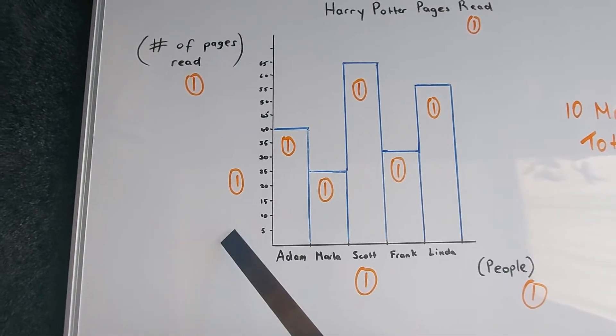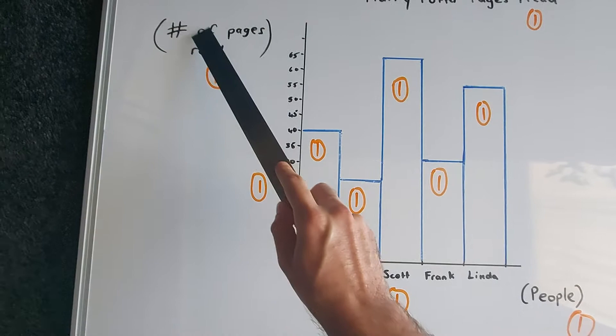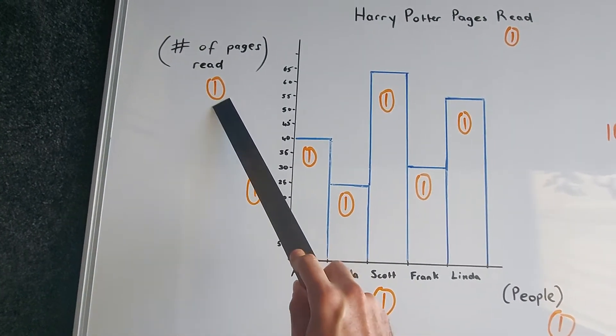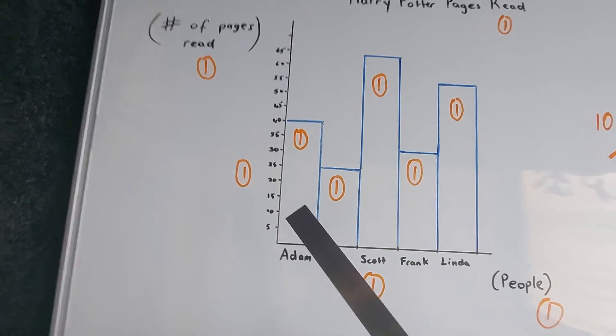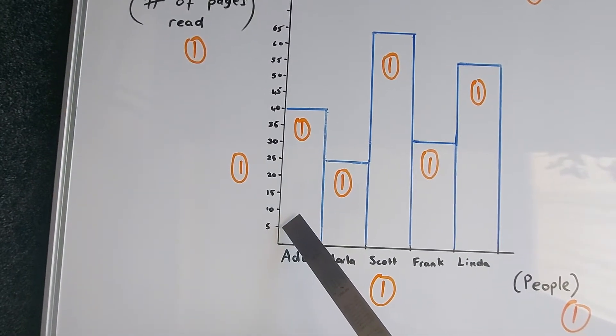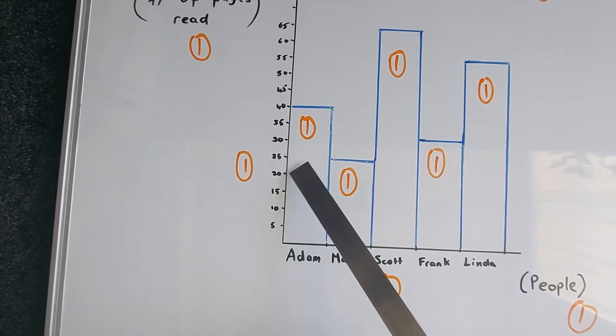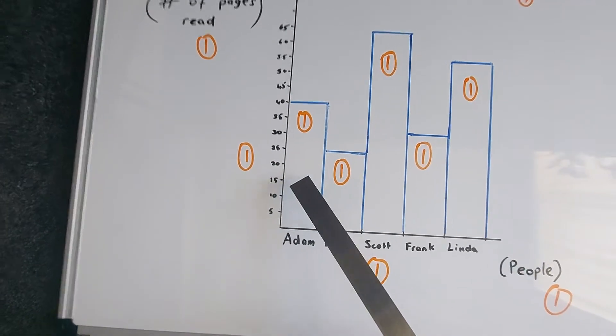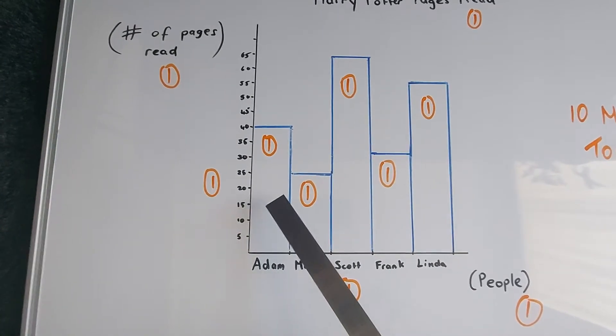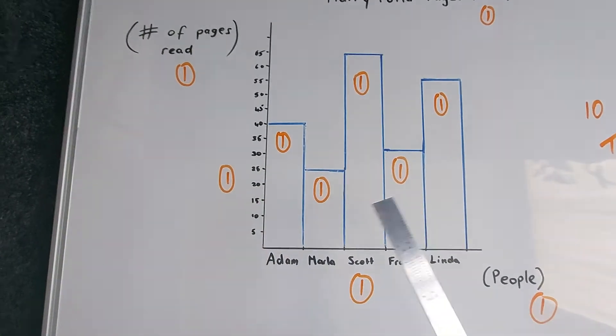On my y-axis here, I've got the number of pages read. So labelling the y-axis gives me one mark as well. And my y-axis is also evenly spaced out. So each space between the value is the same distance. Because I'm using a big whiteboard, I did mine at two centimetres. But yours will be much smaller when you're doing it on a piece of paper.